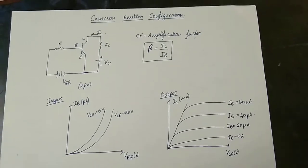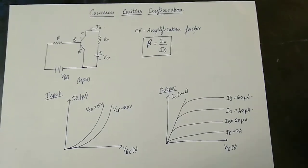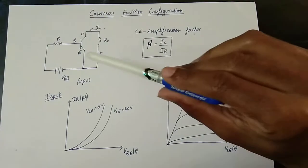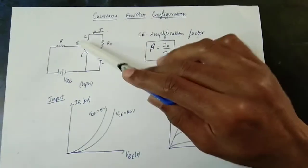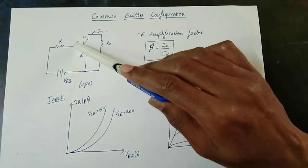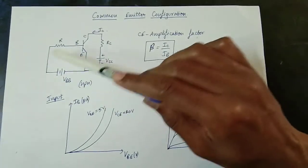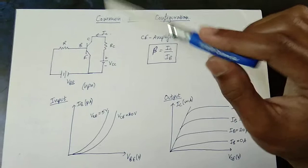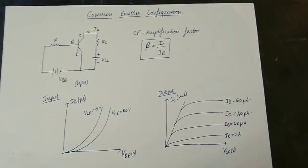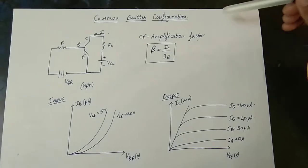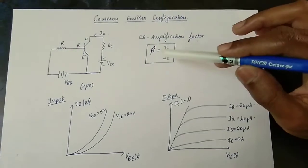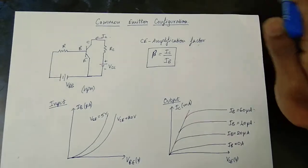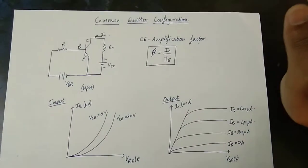For the common emitter configuration, the input is VBB and the base current IB controls the output. The current gain factor beta (β) is IC divided by IB. This is the amplification factor for common emitter.